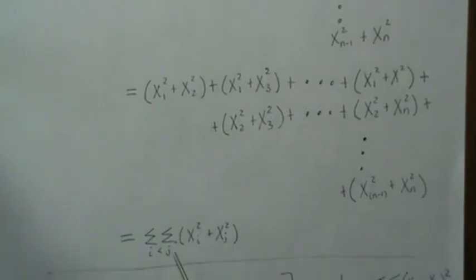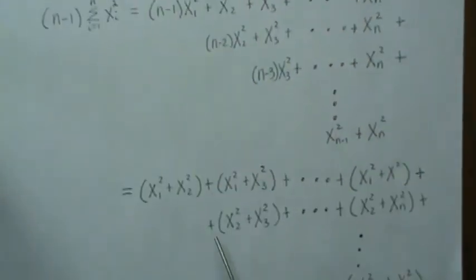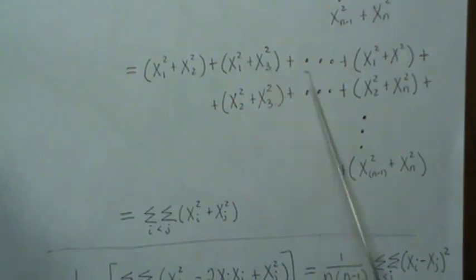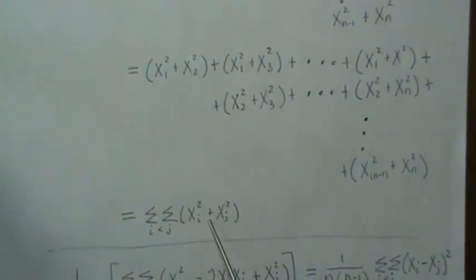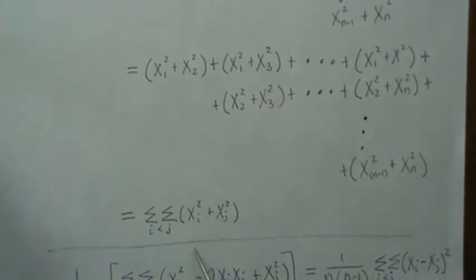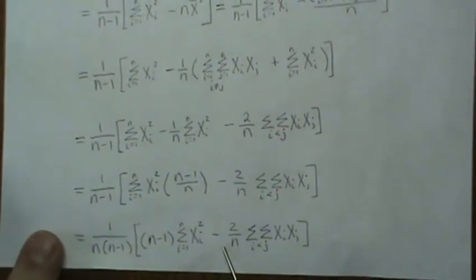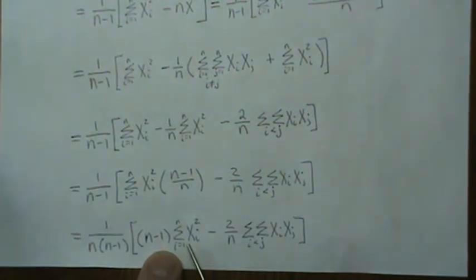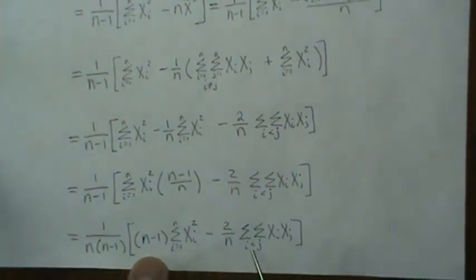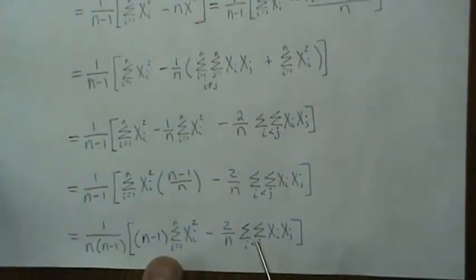Well, that is the sum of i less than j of xi-squared plus xj-squared. That's what this represents. So now we take this piece. Okay, so remember this is i less than j-squared. And we have this piece, so not the n. So this is the sum of xi-squared plus xj-squared, i less than j. So we take that, the i less than j, out front.